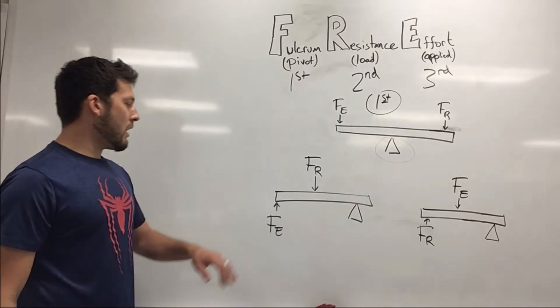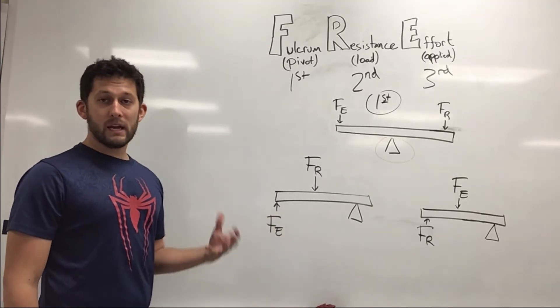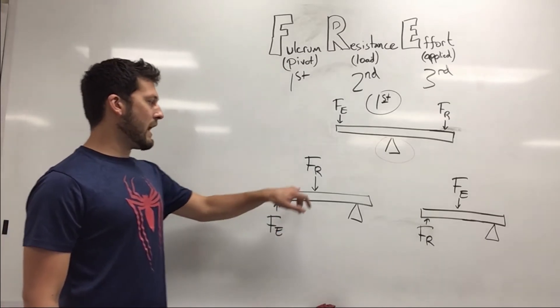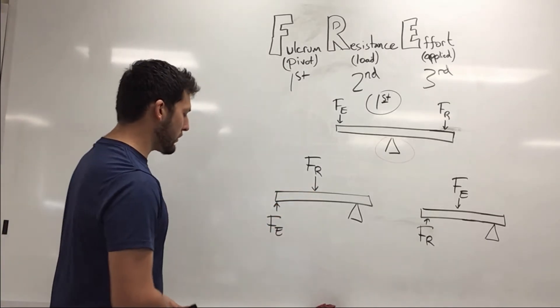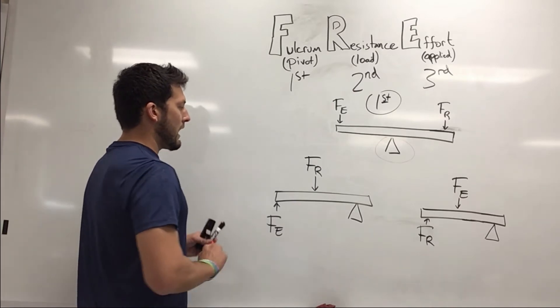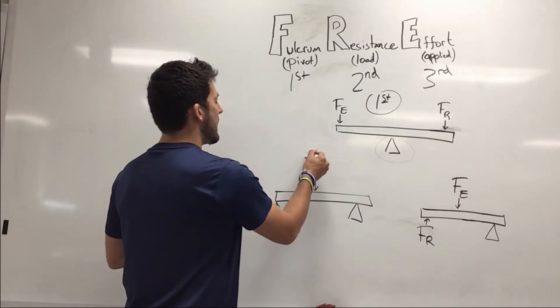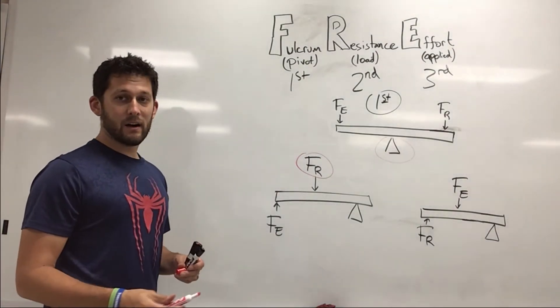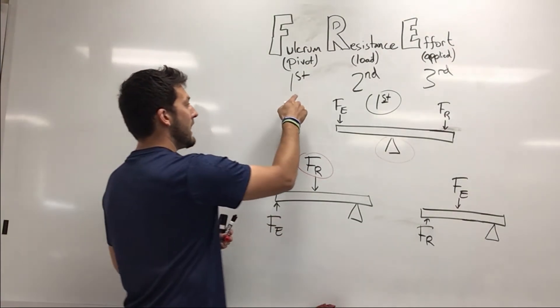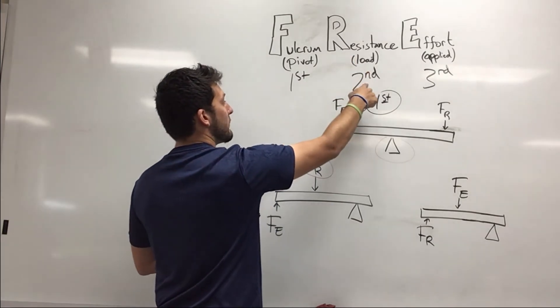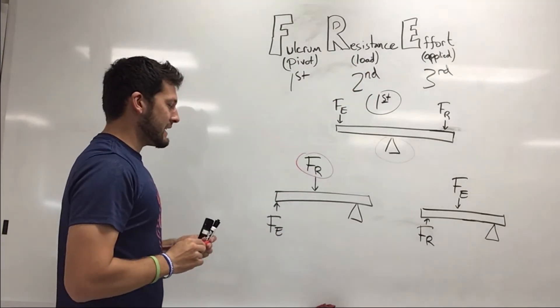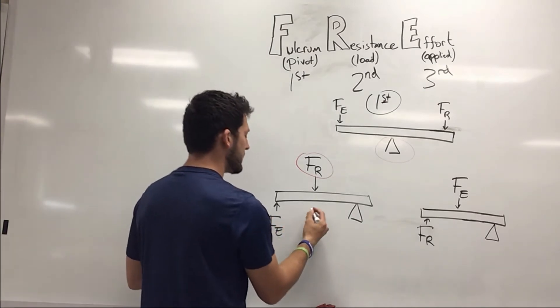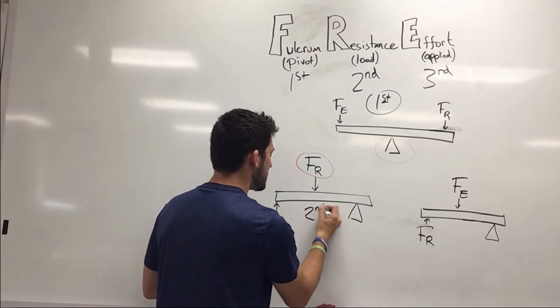Now let's move to our next one right here. And again, using our FRE as an example, we have our effort, we have our resistance and we have our fulcrum. So what I'm going to do is I'm going to say, I have my resistance force. That's the thing in the center. And if we look at it, our FRE, our resistance means that we have a second class lever just because our resistance force is in the center.